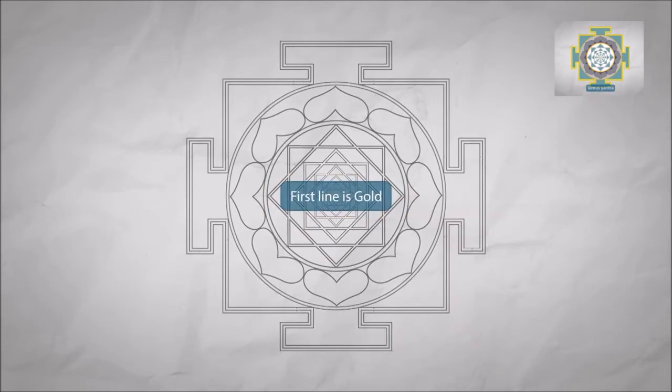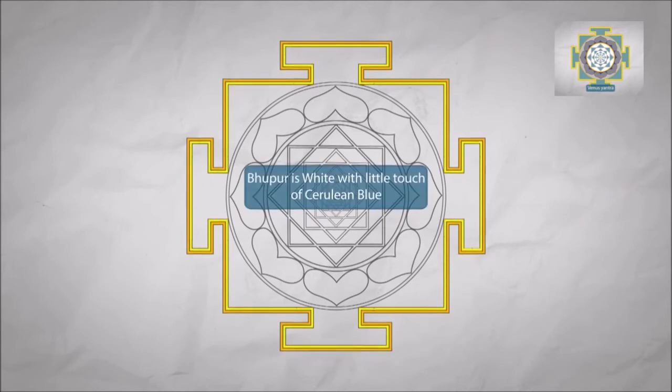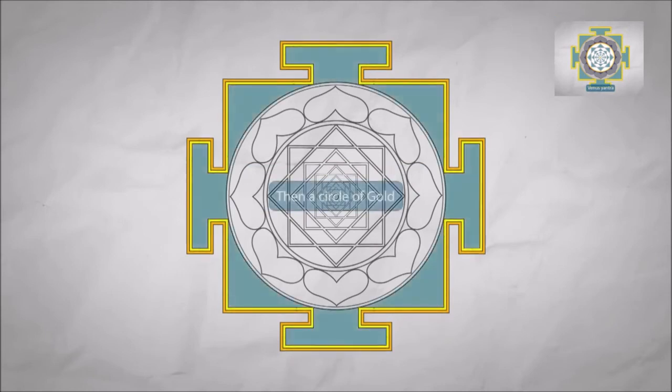First line is gold. The second one is lemon yellow. Bhupur is white with a little touch of cerulean blue. Then a circle of gold.